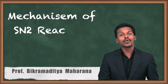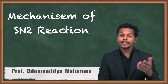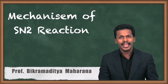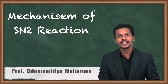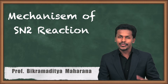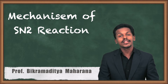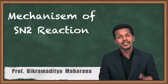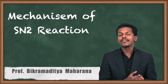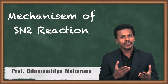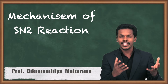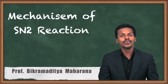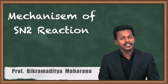Hey friends, in the previous video we got to know about the mechanism of the SN1 reaction, in which we took an example of tertiary butyl bromide and did the hydrolysis with NaOH. Based on that we got the product which was 50% inversion as well as 50% retention. We also did the energy profile diagram and discussed how the mechanism works. Now based on that we are going to talk about the mechanism of the SN2 reaction.